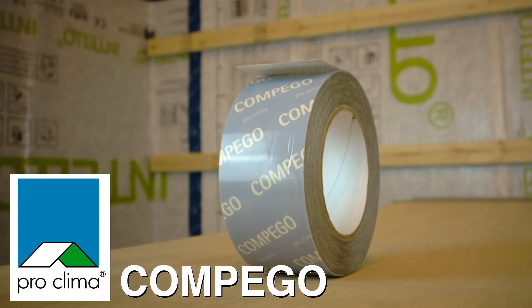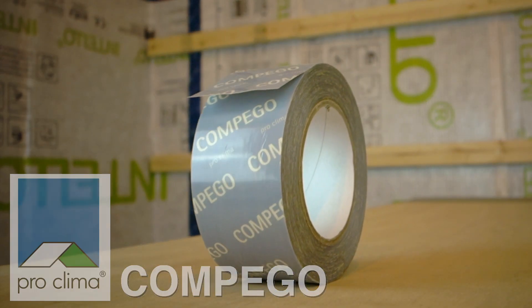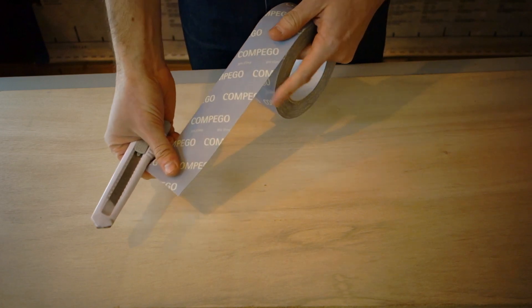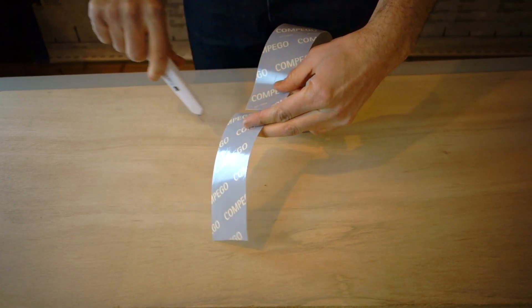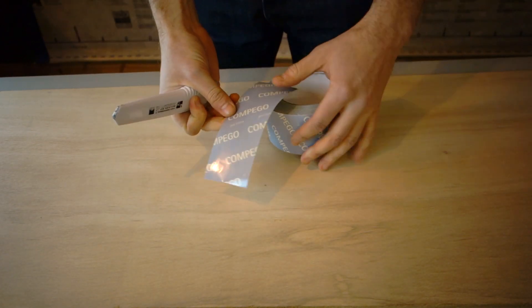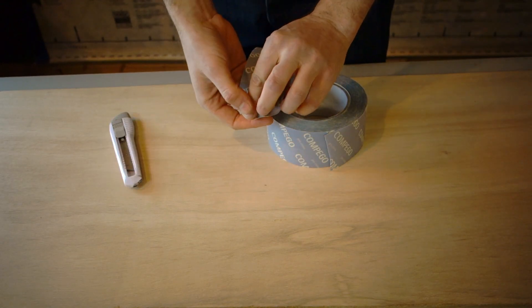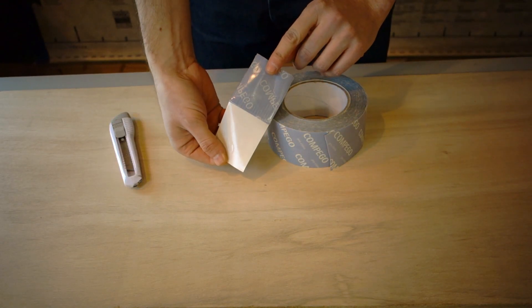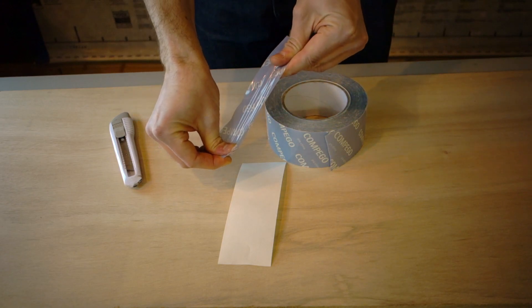Proclima is rolling out a unique new high-performance tape called Compego. Compego's pressure-activated waterproof adhesive is made for airtight bonding to smooth substrates such as metal, plywood, or smooth concrete, but is specially designed for airtight bonding to sub-slab vapor barriers.